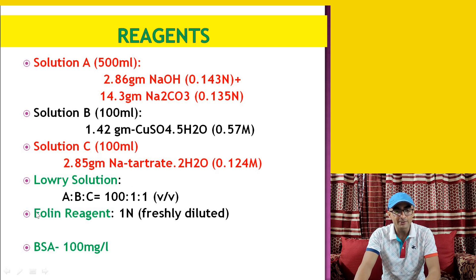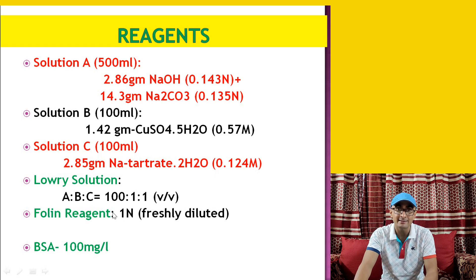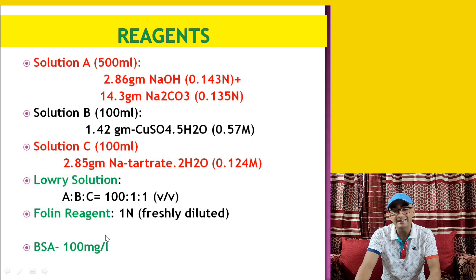We also need Folin reagent, which is ready-made. For this reaction, 1 N Folin reagent is required. It is generally provided as a concentrated solution and needs to be diluted freshly at the time it is required. We also need a protein standard such as bovine serum albumin (BSA), with a stock concentration of 100 mg per liter.